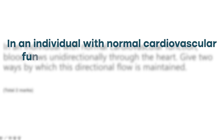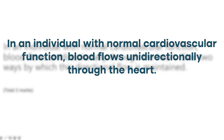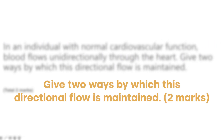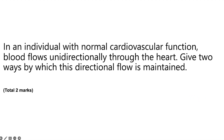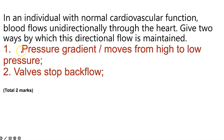Next question: in an individual with normal cardiovascular function, blood flows unidirectionally through the heart. Give two ways by which this directional flow is maintained. First, there are four valves — two atrioventricular valves and two semilunar valves — which prevent the backflow of blood. Second, the order of contraction: atrial systole followed by ventricular systole creates pressure gradients between the chambers and between the ventricle and the artery (aorta or pulmonary artery), so blood always flows from high pressure to low pressure.